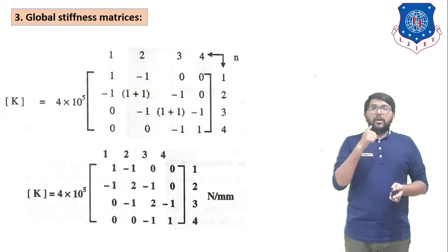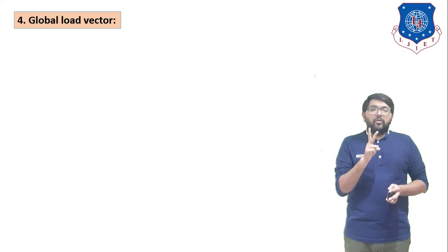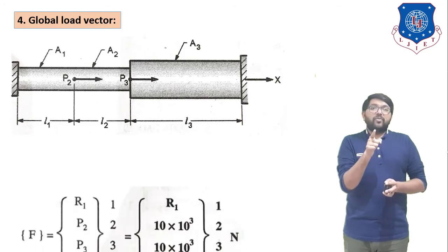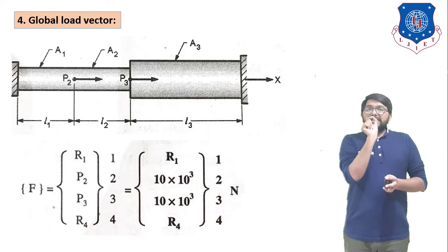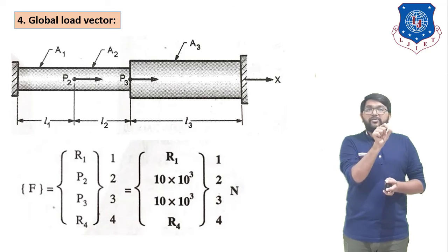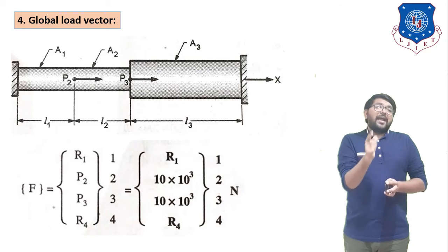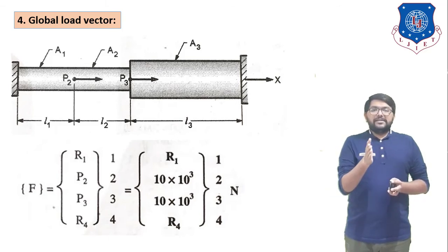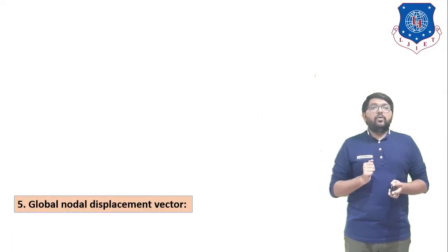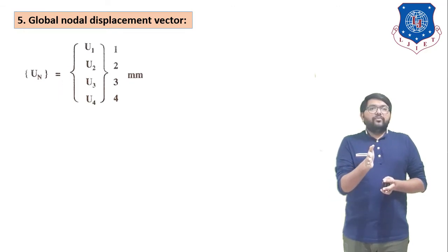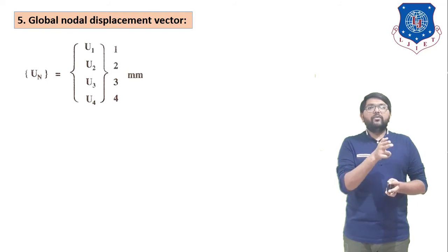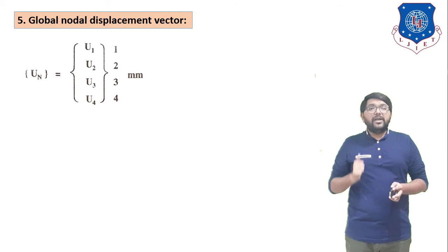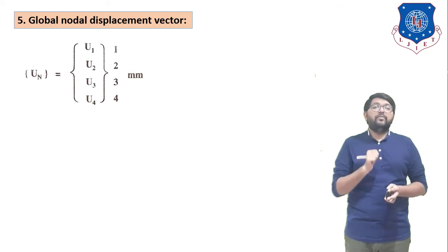Next, we find the global load vector and global displacement vector. The load vector has R1 at node 1 (fixed), 10 × 10³ N at node 2, 10 × 10³ N at node 3, and R4 at node 4 (fixed). The displacement vector is {U1, U2, U3, U4}. Since nodes 1 and 4 are fixed, U1 = 0 and U4 = 0.